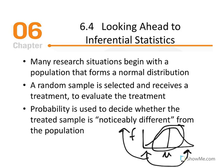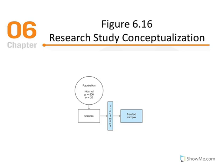Values that are noticeably different are going to be very far from the center. If we hypothesize that the treatment will be effective, we anticipate that the sample mean of the treated group will not be close to the center of the untreated population distribution. Probability forms a direct link between samples and the populations from which they come — this link is the foundation for inferential statistics in future chapters.